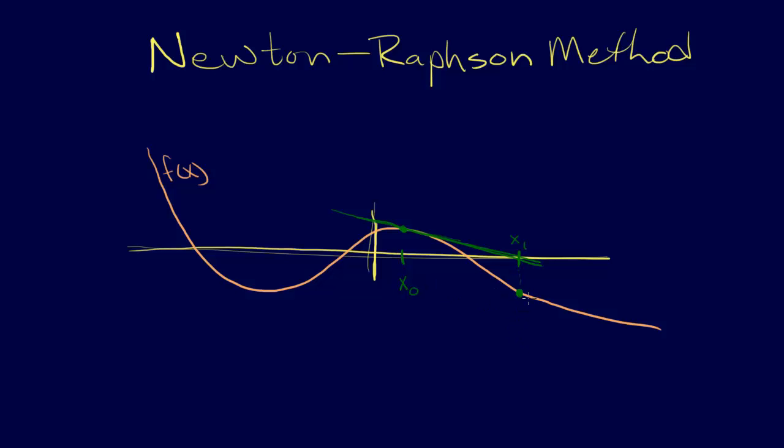Then we find where that intersects with the x-axis, maybe somewhere in there. We find that point and that's going to be our new x, so that'll be our x2.